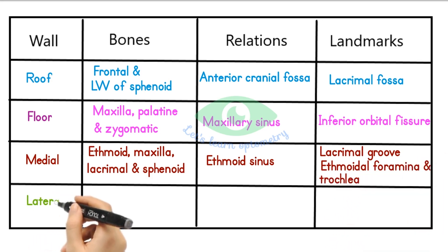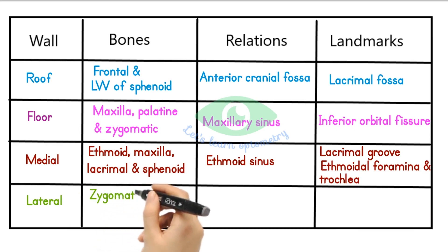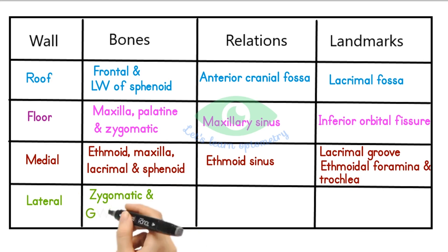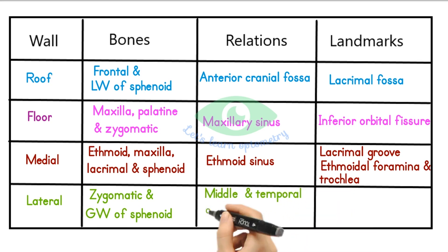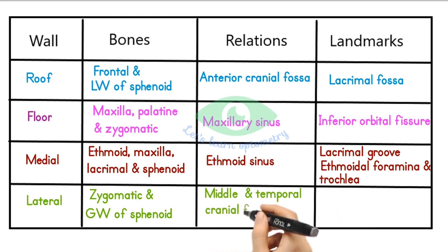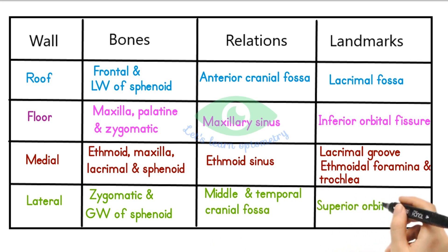The lateral wall is the thickest and strongest wall of the orbit, which is made up of the zygomatic bone and the greater wing of the sphenoid bone. It posteriorly separates the orbits from the middle and the temporal cranial fossa. The most prominent landmark of the lateral wall is the superior orbital fissure, formed between the greater and the lesser wing of the sphenoid bone.